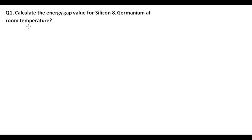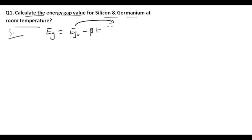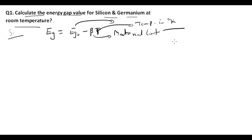Question number one: calculate the energy gap value for silicon and germanium at room temperature. For silicon, the energy gap is equal to the energy gap at zero degree Kelvin minus beta times T, where beta is the material constant and T is the temperature in Kelvin. For silicon, beta is equal to 3.6 × 10⁻⁴.